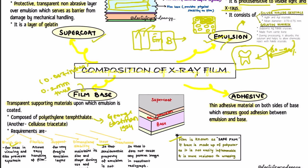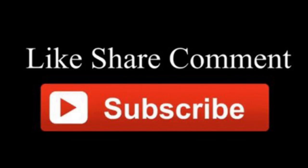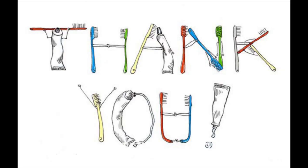The film is also more resistant to warping. We have seen about latent image formation in a previous video, which explains exactly why the image forms. In the next video, we are going to see about the processing of the x-ray film. This was all about the composition of the x-ray film. I hope you found this video helpful — please like, comment, share, and subscribe.